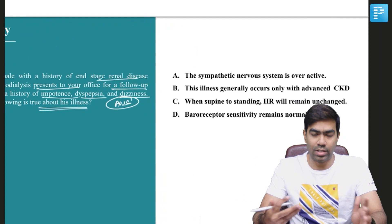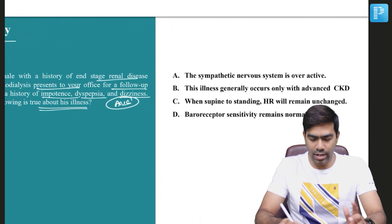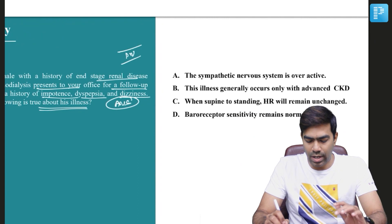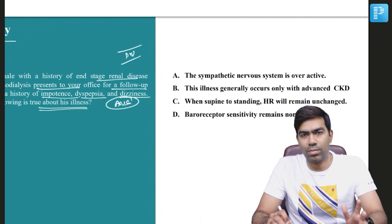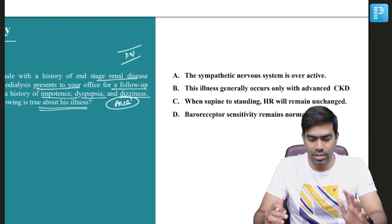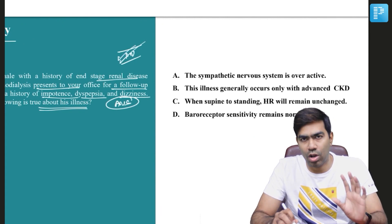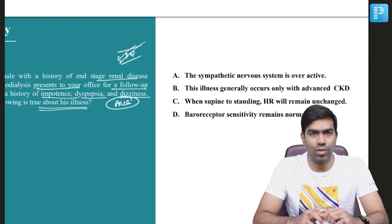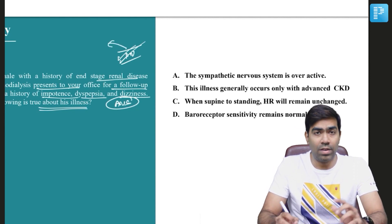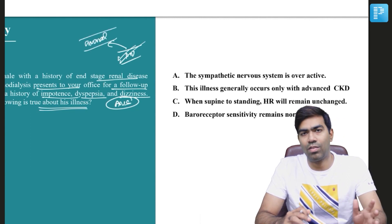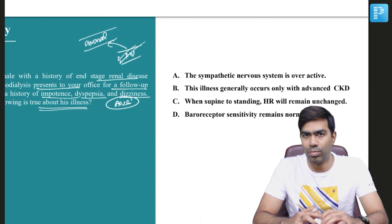If you see this kind of history, it clearly tells you that this patient is suffering from peripheral neuropathy due to chronic uremia. The most common neurological problem in patients with CKD and chronic uremia is peripheral neuropathy. Peripheral neuropathy will be typically axonal type and it can have a lot of autonomic manifestations — a kind of autonomic neuropathy as well.